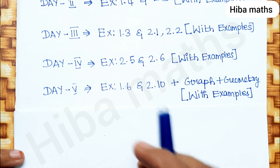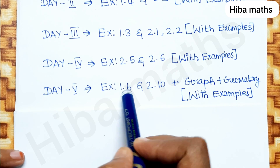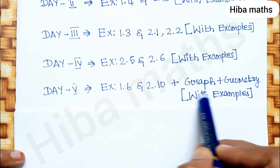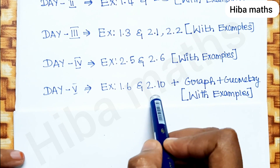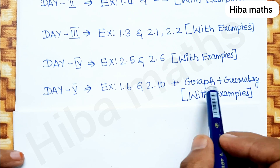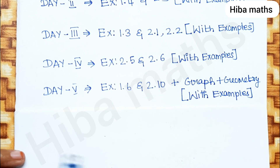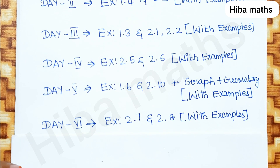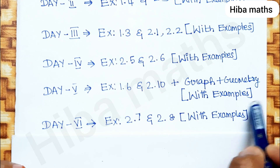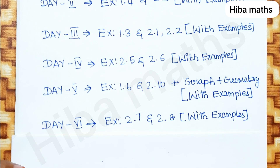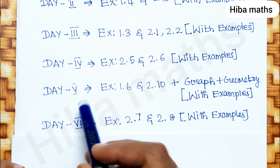Day 5: exercise 1.6, covering 1-mark questions. That relates to graph geometry — work out with examples. Day 5 includes some relaxation. One-mark graph geometry questions are easy and correct. This is especially helpful for slow learners — if you follow this, you can pass.